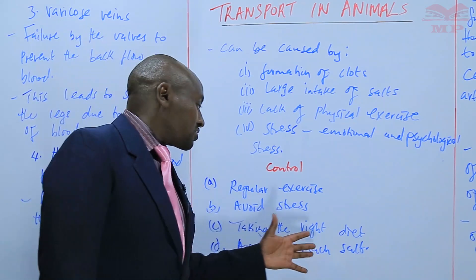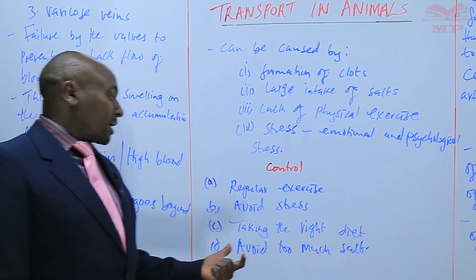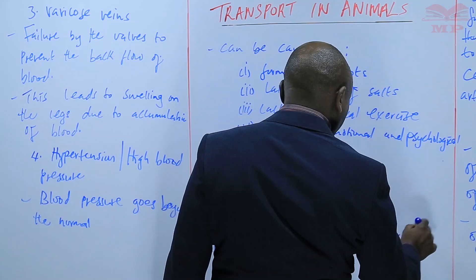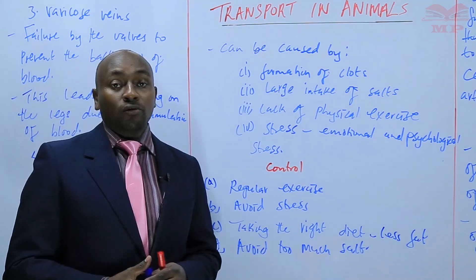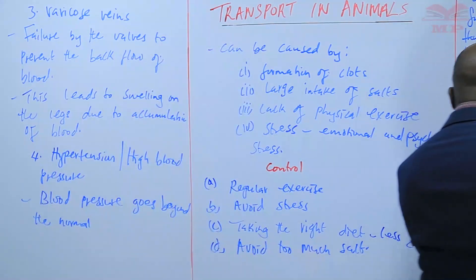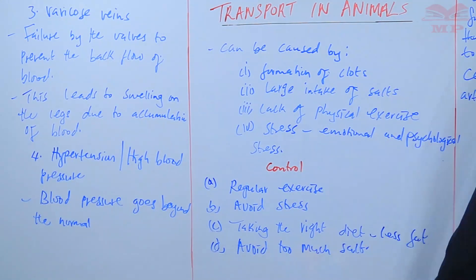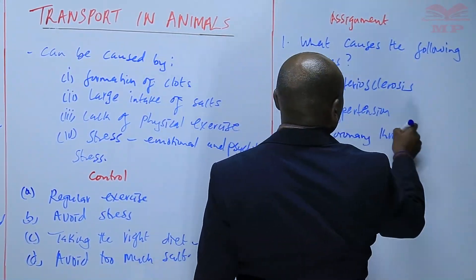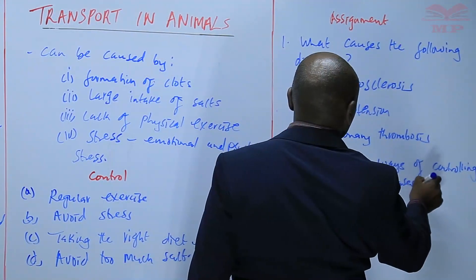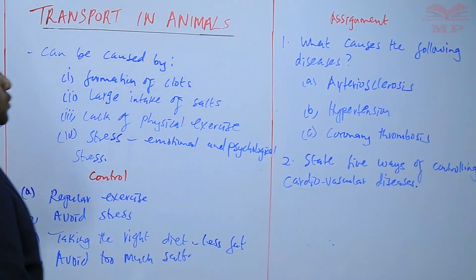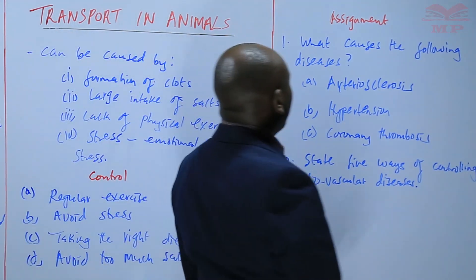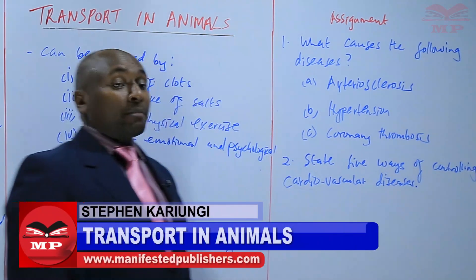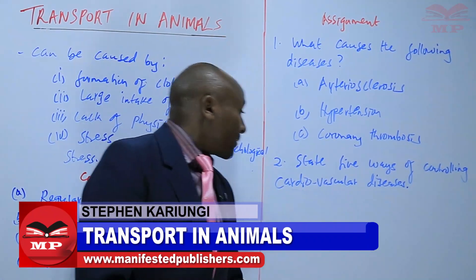So basically, cardiovascular diseases are controlled by controlling one's lifestyle: regular exercise, avoiding stress or stressful situations, taking the right diet with less fat, and avoiding too much salt. We will have a short assignment on that. The first question: what causes the following diseases — arteriosclerosis, hypertension, and coronary thrombosis? Number two: state five ways of controlling cardiovascular diseases.